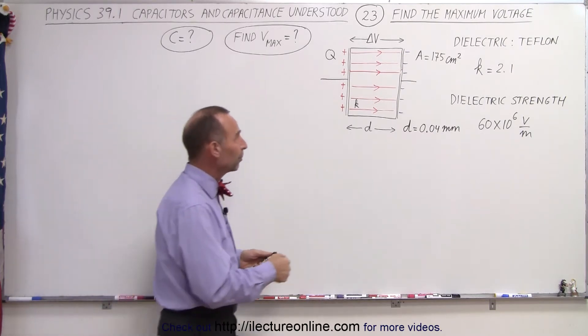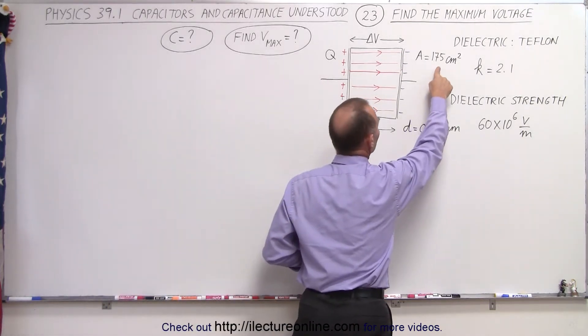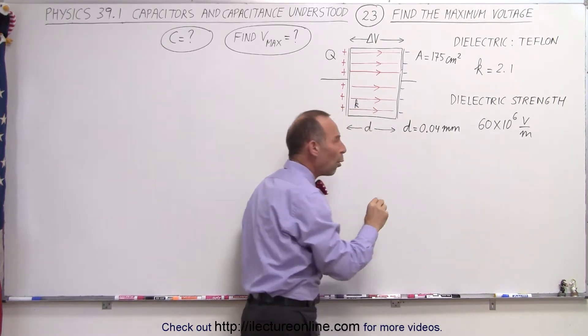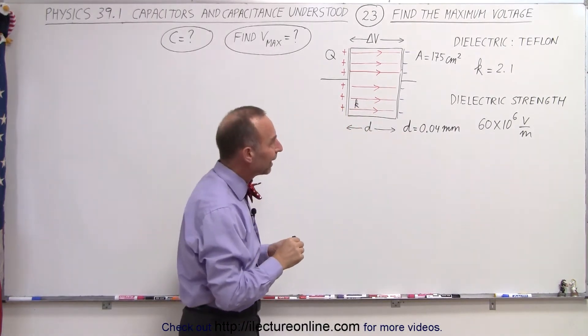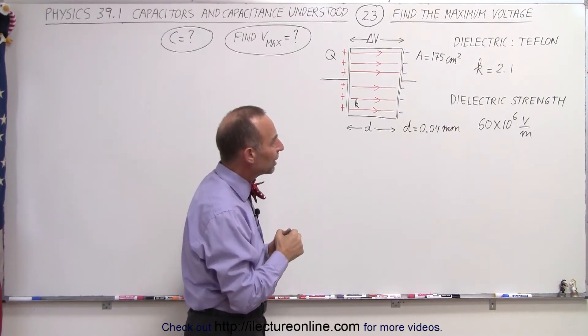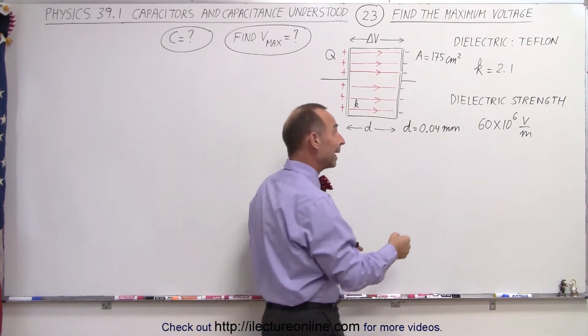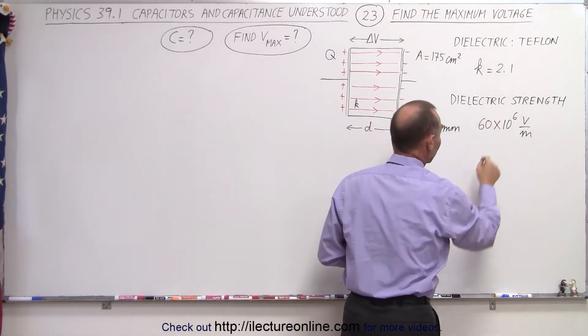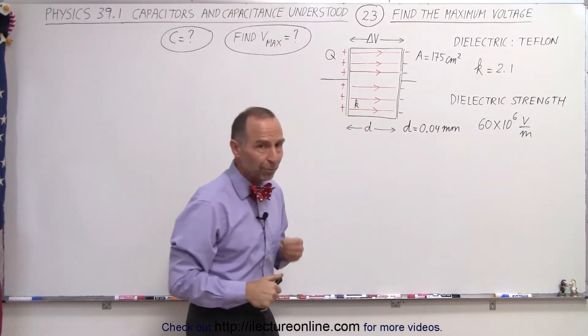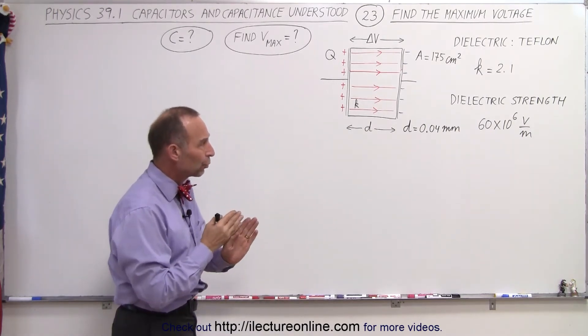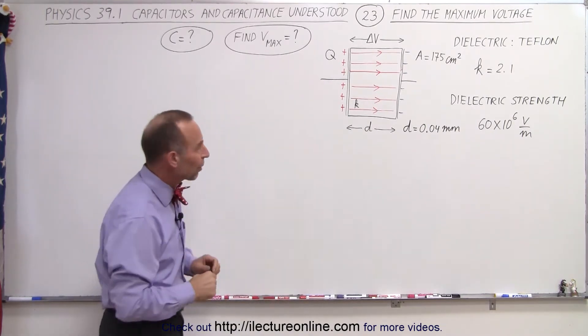We have a capacitor that has a plate area of 175 square centimeters, a distance between the plates very tiny, 0.04 millimeters, and the dielectric used in there is Teflon with a dielectric constant of 2.1 and the dielectric strength, which is quite large, of 60 times 10 to the 6 volts per meter. That's why Teflon tends to be used for something like this in order to increase the dielectric strength.